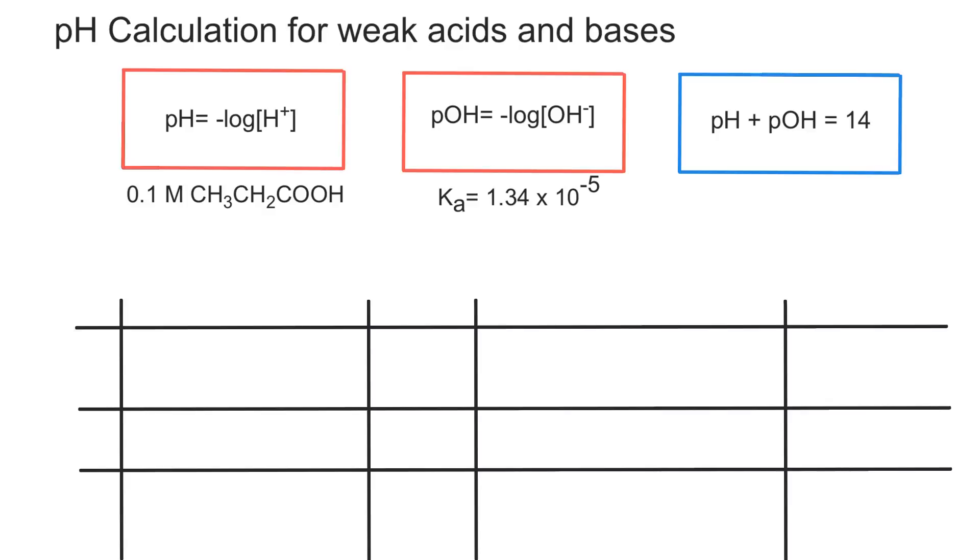So instead of just using the formula that says that pH is equal to a negative log of the concentration of hydrogen ions, we need to first find that concentration of hydrogen ions. And to be able to do that, starting from a weak base or a weak acid, we have to take into consideration the changes that occur to reach equilibrium.